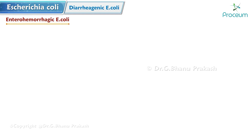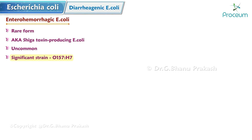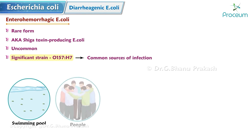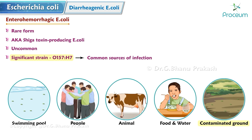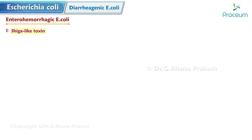Enterohemorrhagic E. coli (EHEC) is a rare form, also known as Shiga toxin-producing E. coli. The O157:H7 strain is a clinically significant strain that can cause EHEC infection. Common sources of infection include swimming pools, direct contact with people and animals, ingestion of contaminated food and drinking water — contaminated ground beef is the most common cause of foodborne outbreaks, though produce-associated outbreaks are also common.